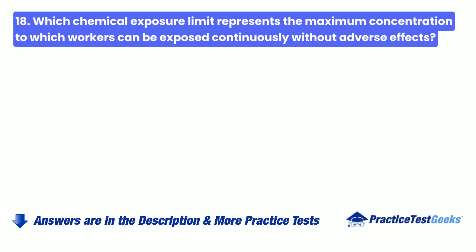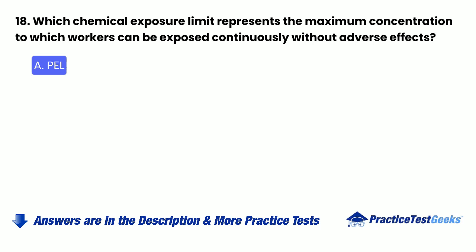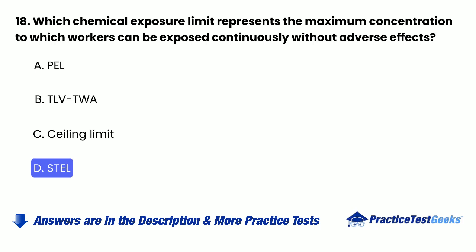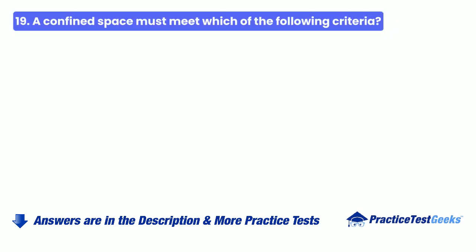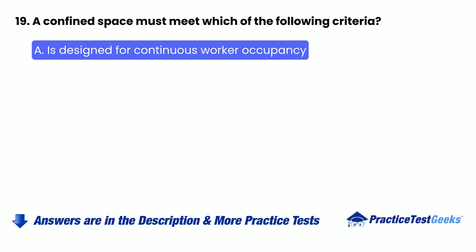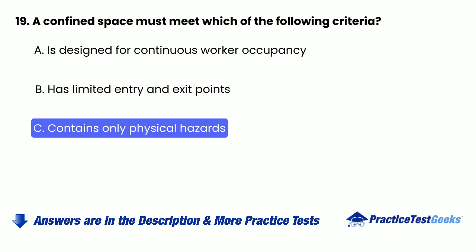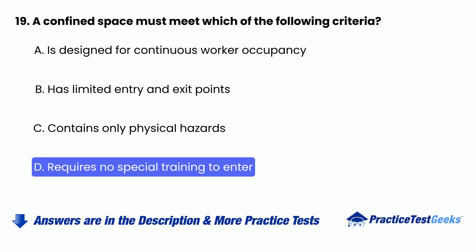Question 18: Which chemical exposure limit represents the maximum concentration to which workers can be exposed continuously without adverse effects? Question 19: A confined space must meet which of the following criteria? A. Is designed for continuous worker occupancy. B. Has limited entry and exit points. C. Contains only physical hazards. D. Requires no special training to enter.